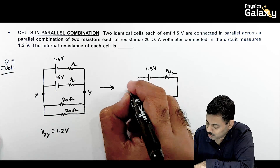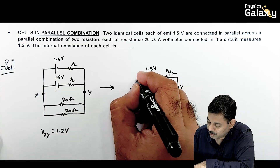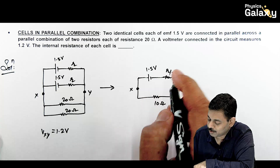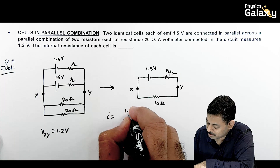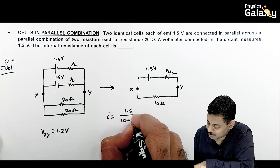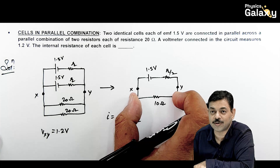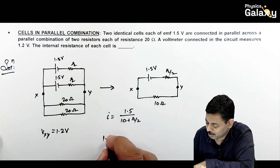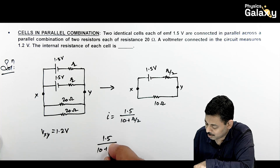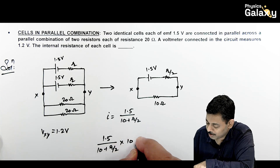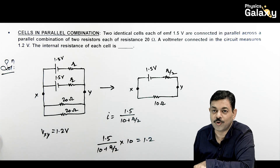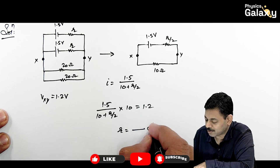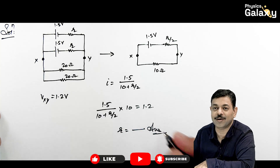The current flowing through the circuit is 1.5 / (10 + r/2). The potential difference across the 10 ohm load is 1.2 volt, so: [1.5 / (10 + r/2)] × 10 = 1.2. Simplifying this equation gives the value of r. This is left as an exercise for the students to solve.